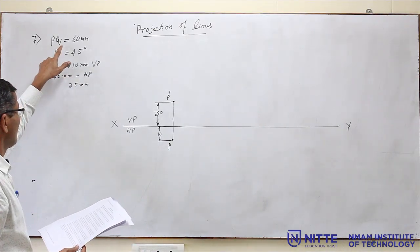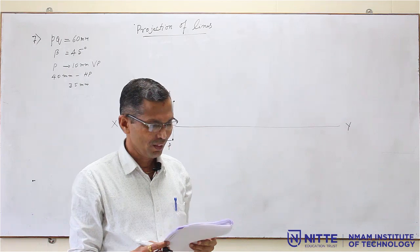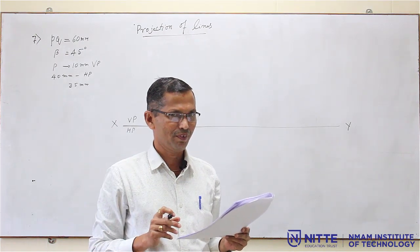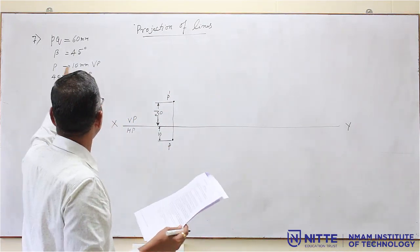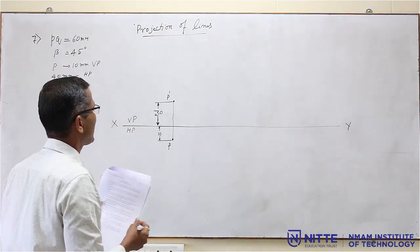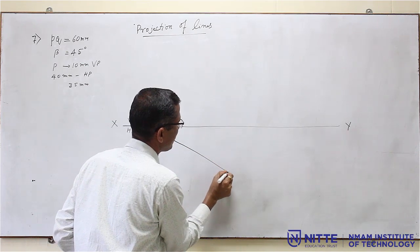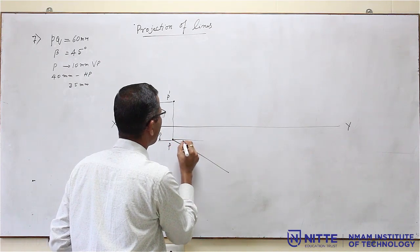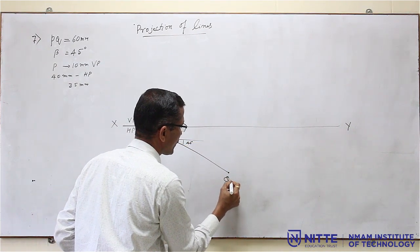Now refer to the reference figure: A dash, B dash, A dash B1 dash, A dash B2 dash, AB1, AB2, then AB. In that figure, the length of AB — that is PQ — is given. The top view length is given and its inclination is also given. Beta is the inclination of line PQ. So I can draw a line here. The length is 60mm and the angle is 45 degrees. I will call this as point Q. This is the top view.